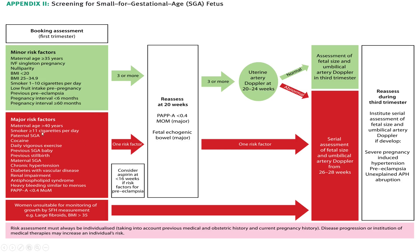If there are 3 or more minor risk factors, you reassess at 20 weeks, and if 3 or more persist, you perform uterine artery Doppler at 20 to 24 weeks. If normal, repeat the uterine artery Doppler in the third trimester. If abnormal, proceed as per the major risk factor pathway.